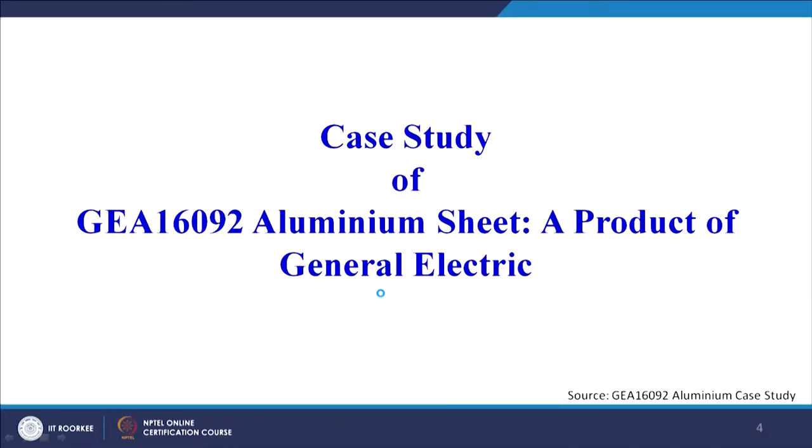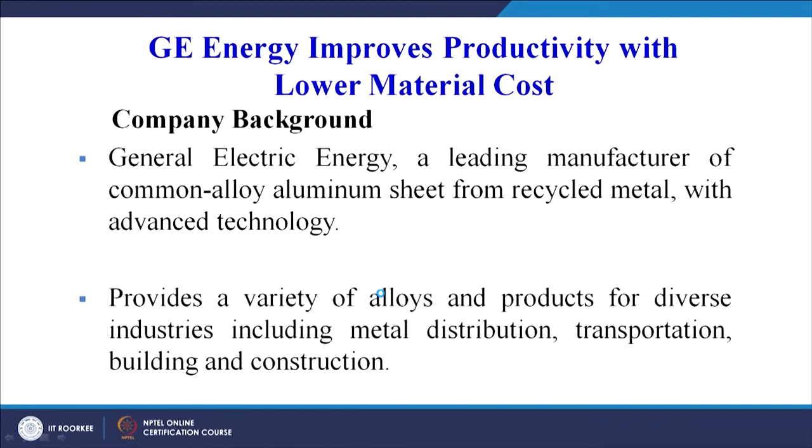Now let us see another case study — GEA 16,092 aluminium sheet, a product of General Electric. We will see how process change has helped to improve the productivity of the organization. The background: General Electric Energy is a leading manufacturer of common alloy aluminium sheet from recycled metal with advanced technology. It provides a variety of alloys and products for diverse industries including metal distribution, transportation, building and construction — showing that this product has wide application, so the volume of production is bound to be large.